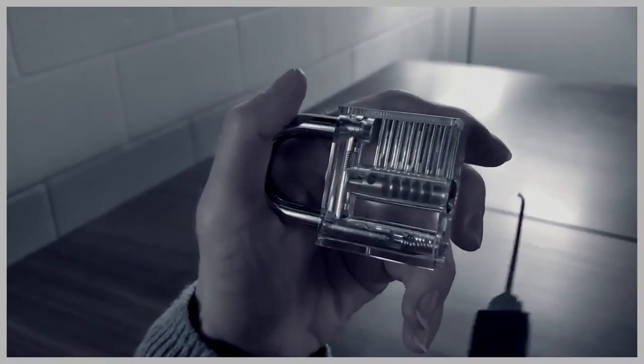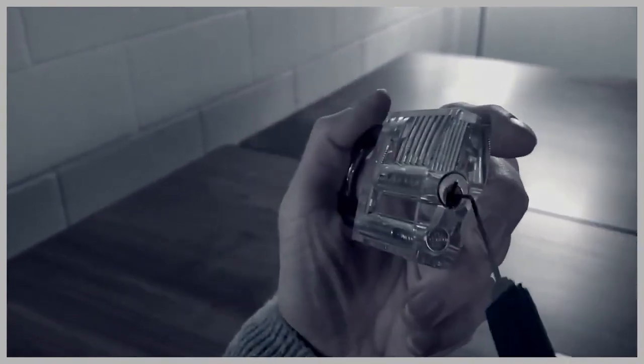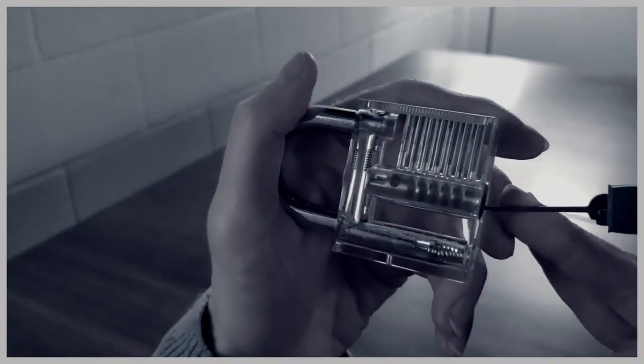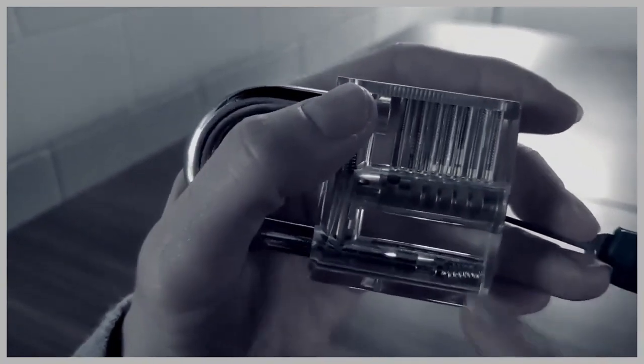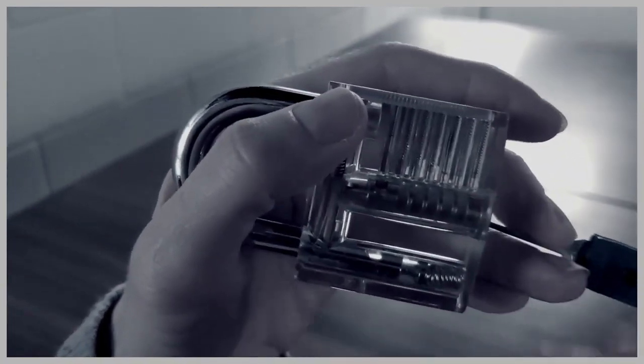Okay, so the principle with lock picking. Here we have a nice transparent lock. You can see this is where the key would normally go in. But if you lift up one of these pins here, you can see that little black line. That line is a gap between these two different pins.